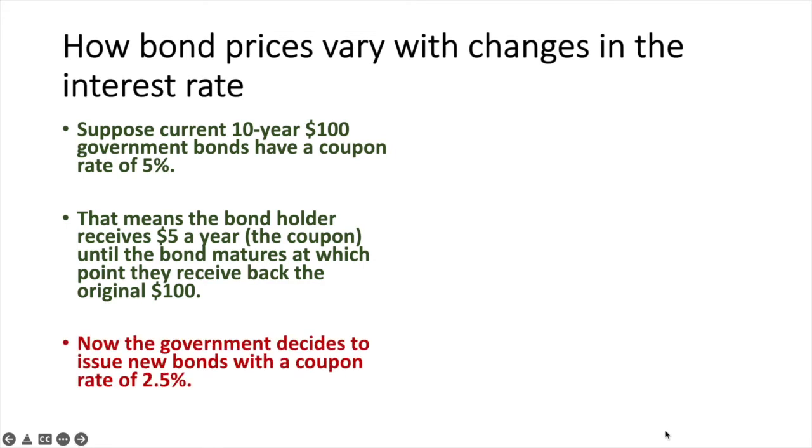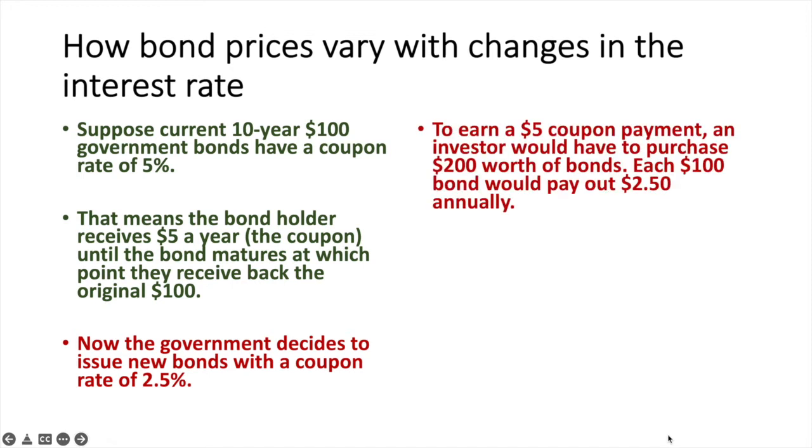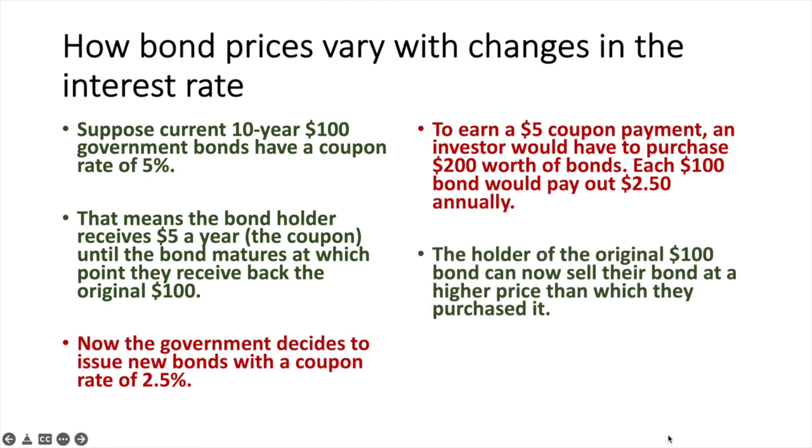Now the government decides to issue new bonds with a coupon rate of 2.5%. To earn a $5 coupon payment an investor would have to purchase $200 worth of bonds. Each $100 bond would pay out $2.50 annually. The holder of the original $100 bond can now sell their bond at a higher price than which they purchased it.